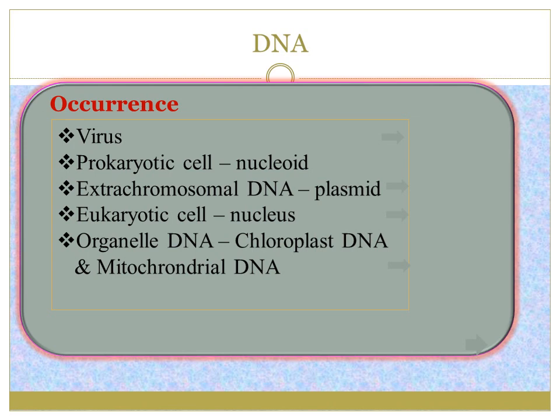Moving on to deoxyribonucleic acid — DNA is present in viruses as a genetic material. The virus which contains DNA is called a DNA virus. DNA is present in prokaryotic cells in the region called the nucleoid. Some of the extra-chromosomal DNA present in a prokaryotic cell is named plasmid, and it plays a very important role in genetic engineering. Eukaryotic cells contain DNA inside the nucleus, and some membrane-bound organelles — chloroplasts and mitochondria — also contain DNA, called organelle DNA.